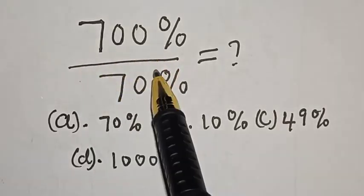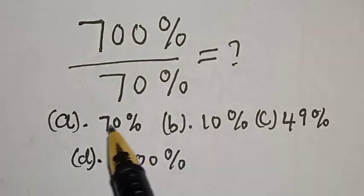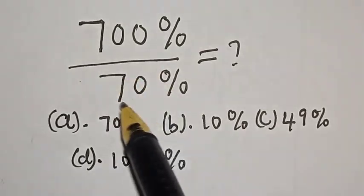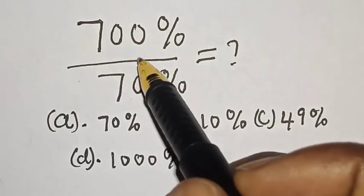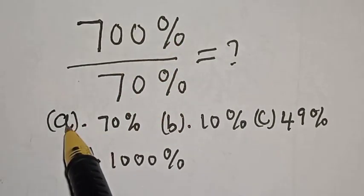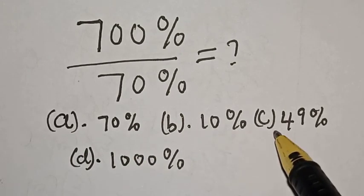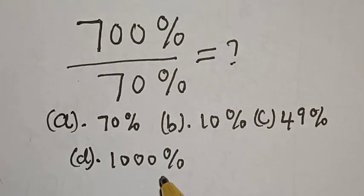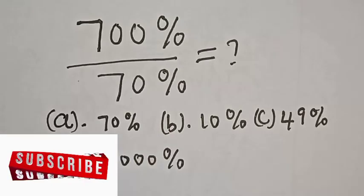700% divided by 70% is equal to what? Hi everyone, welcome to my class. In this class, we quickly want to evaluate this math problem: 700% divided by 70%, with the following options. A is equal to 70%, B is equal to 10%, C is equal to 49%, and D is equal to 1000%. Let's see what the answer will look like.